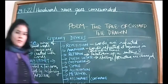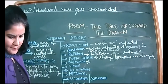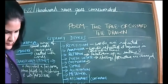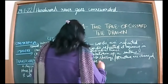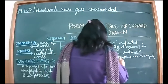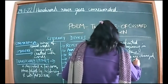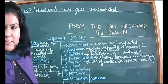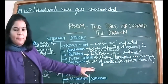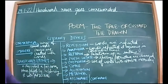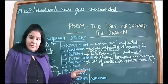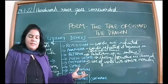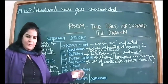Oxymoron is the use of two or more words with opposite meanings. This is going to help you in each and every poem — devices are there in every poem. For example, 'pet dragon' is used in the poem. A dragon is not a pet animal, but the word 'pet dragon' is used — that is an example of oxymoron: the use of words with opposite meaning that cannot coincide together but are being used.